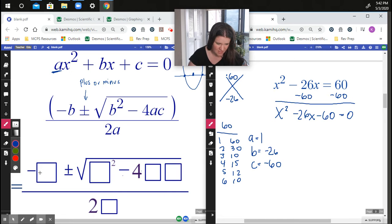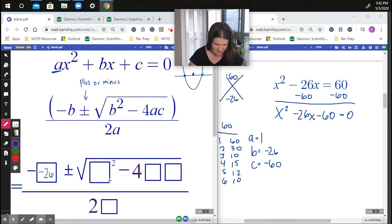So B, negative B, so it's a negative negative 26, plus or minus square root of B squared, well negative 26 squared, minus four times A, right? So I'm going A, which is one, and C, which is negative 60, right? All over 2A, 2 times 1 in this case.